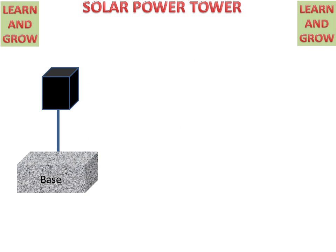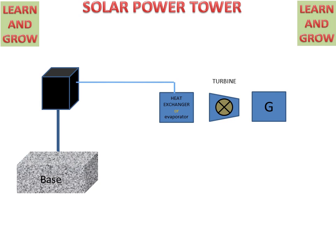We have a solar power tower connected to a heat exchanger. The heated fluid is used by the heat exchanger to create steam for the turbine, and the turbine is connected to the generator.